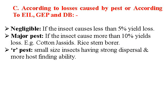According to the losses caused by the pest based on the economic injury level, general equilibrium position, and damage boundary: Negligible pest — if the insect causes less than 5% loss, it is termed as negligible. Major pest — if the insect causes more than 10% loss, then it is termed as a major pest.